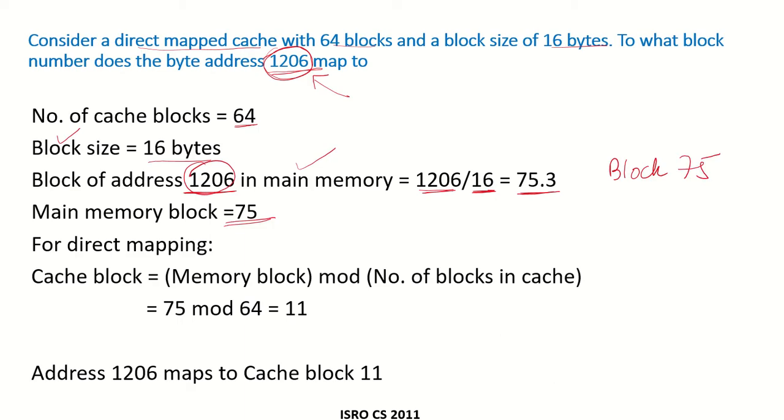For direct mapping, the cache block will be given by the memory block mod the number of blocks in the cache. So the memory block is 75 mod the number of blocks in the cache is 64. 75 mod 64 gives us 11, which means address 1206 will come to cache block 11.